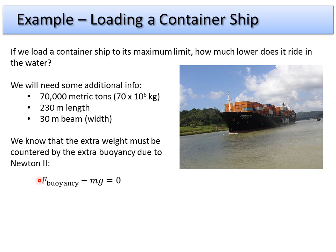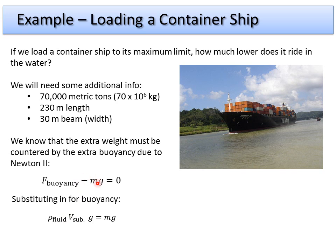Looking at our free body diagram, we have a buoyancy force pushing up and an extra weight force pushing down. We substitute in for the buoyancy force and rearrange — moving the mass times gravity to the other side. We find that the fluid density times the extra submerged volume times gravity has to equal the downward weight force.